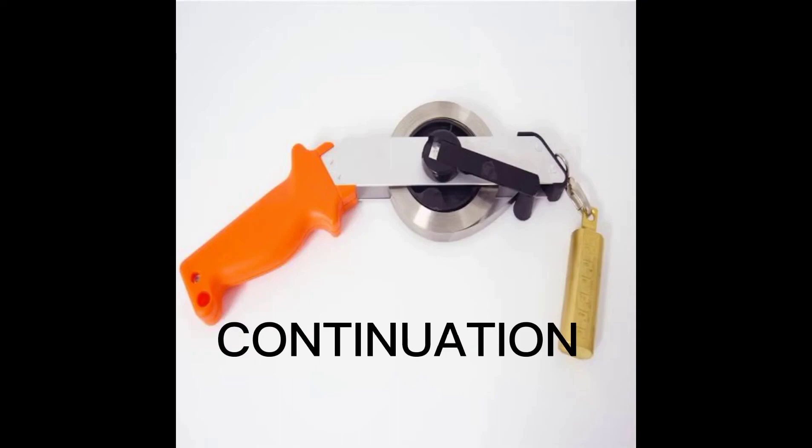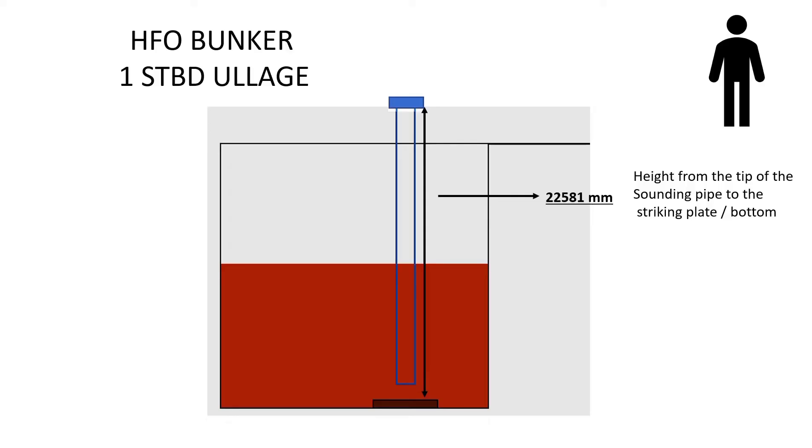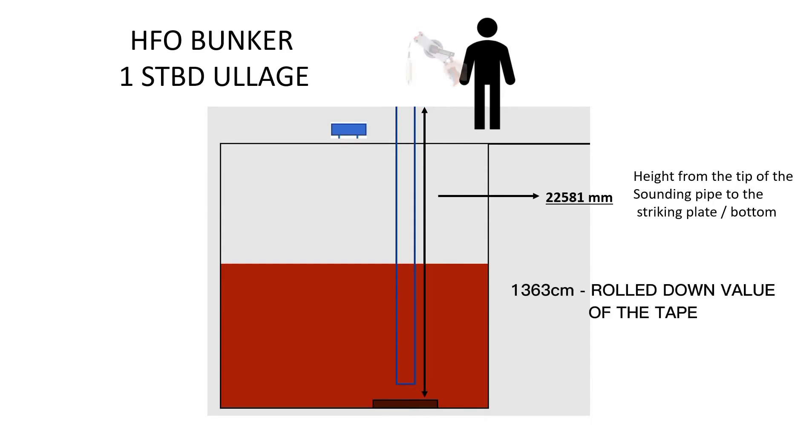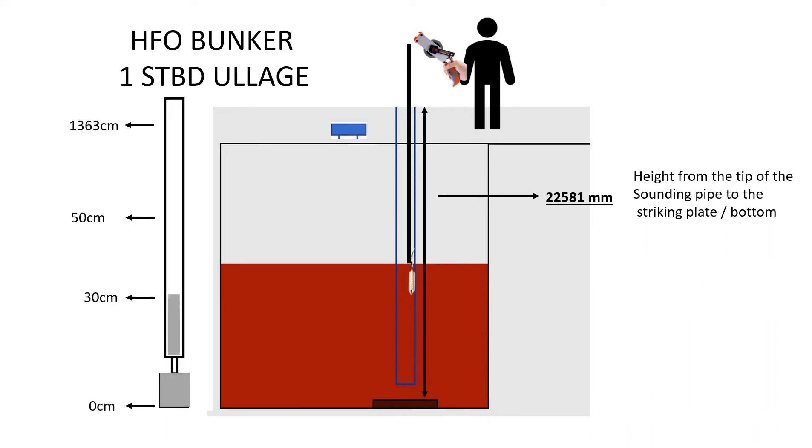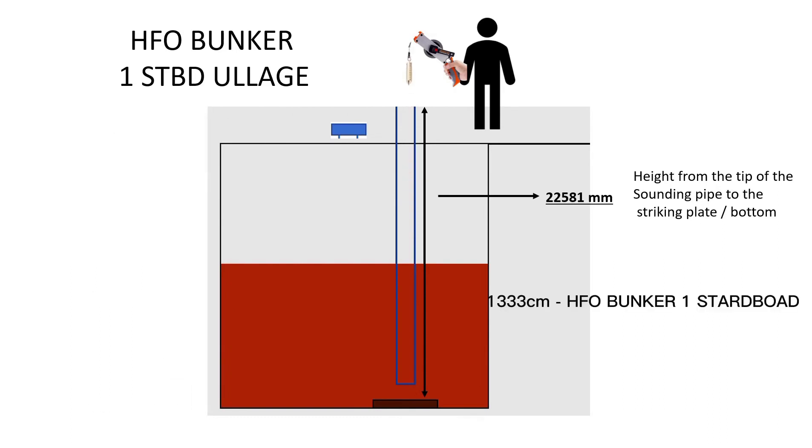Let's go back. How could that get the value? Cadet is tasked to measure the ullage HFO bunker 1 starboard. The height of the tip of the sounding pipe to the striking plate is 22581 centimeter. Based on his calculations and compared value, he will roll down 1363 centimeter of tape in the sounding pipe. While slowly rolling down the tape, he measured 30 centimeter of oil in the tape. Let's calculate: 1363 centimeter minus 30 centimeter equals 1333 centimeter. 1,333 centimeters is the HFO bunker 1 starboard ullage.